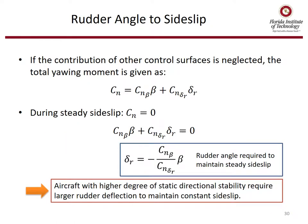If the contribution of other control surfaces is neglected, the total yawing moment is given as C_n equals C_n beta times beta plus C_n delta-r times delta-r, assuming the aileron contribution is negligible. During steady sideslip, the yawing moment coefficient is zero, so we can derive the rudder deflection as a function of C_n beta, C_n delta-r, and beta. Aircraft with a higher degree of static directional stability require larger rudder deflection to maintain constant sideslip.